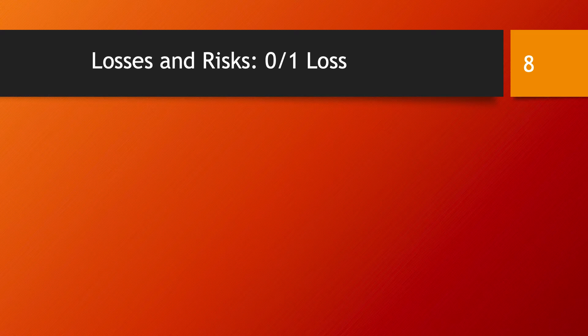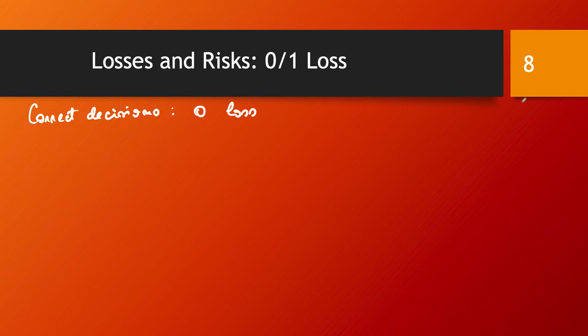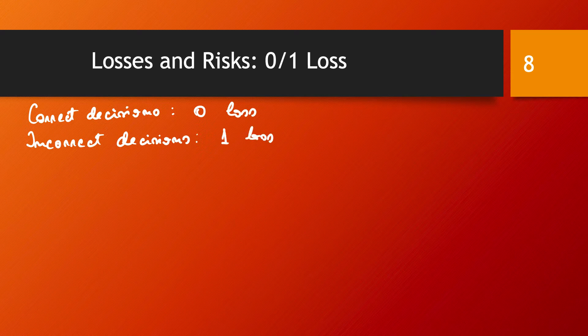I want to bring this to the simpler case of the so-called 0-1 loss. This means correct decisions have a loss of 0, and incorrect decisions are all equal — it doesn't matter in which way you are incorrect or which class you chose incorrectly. They all have exactly the same loss. We can say this is a loss of 1, where the value 1 doesn't carry units; it just conveys that all losses are equal. So lambda takes only values 0 and 1.